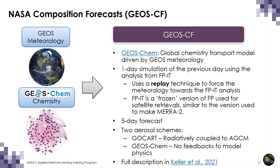Because FP-IT is a consistent, unchanging model version, the replay fields from GeoCF can be used as a continuous atmospheric composition archive. In the GeoCF system, two aerosol schemes run simultaneously: GOCART, which is radiatively coupled to the atmosphere, and the GEOS-Chem aerosol module — a bulk aerosol scheme with the same aerosols as GOCART (dust, sea salt, carbonaceous aerosols, sulfate, and nitrate) plus secondary organic aerosols. For more details about differences between GOCART and GEOS-Chem, visit the GEOS-Chem website.